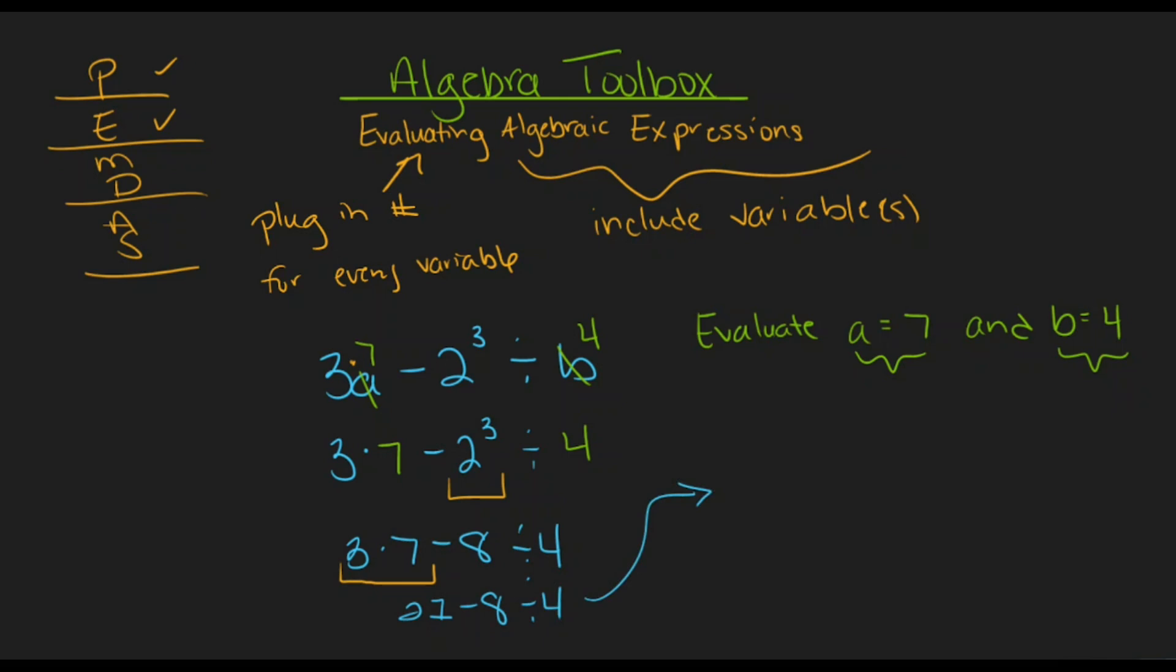For the sake of room, I'm going to rewrite our problem over here. So we have 21 minus 8, divided by 4. I do still have this division left, so this will be the next operation that I need to complete. So 8 divided by 4 is 2, so I can rewrite this as 21 minus 2.